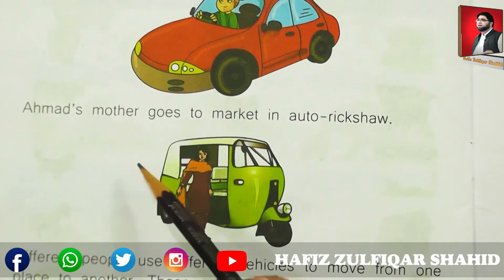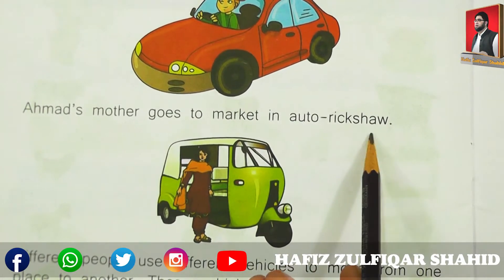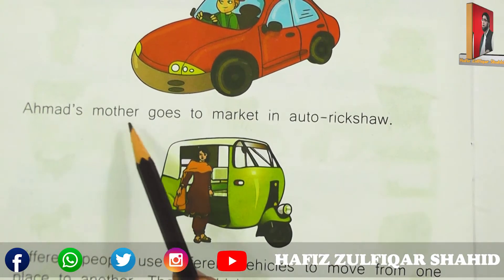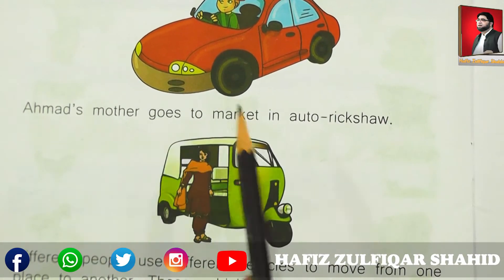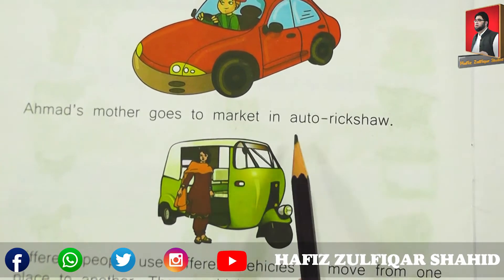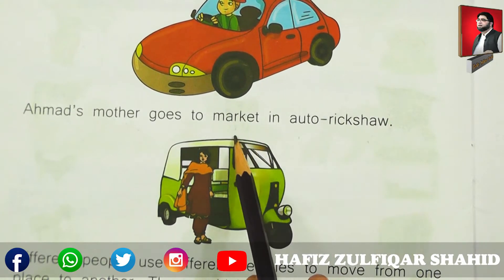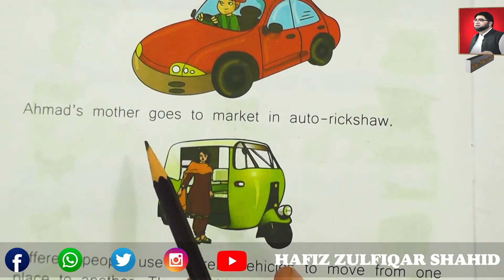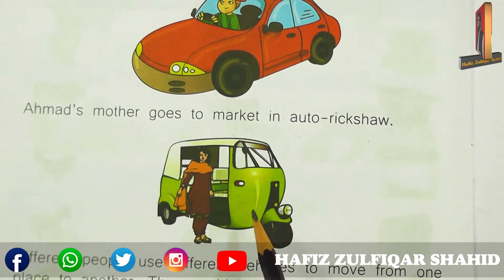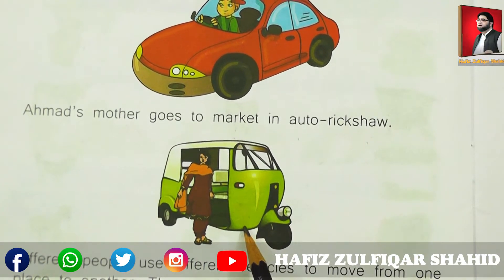Ahmad's mother goes to market in auto rickshaw. Ahmad کی mother market کیسے جاتی ہے؟ In auto rickshaw. وہ rickshaw میں بیٹھ کر market جاتی ہیں. So auto rickshaw is a transport.